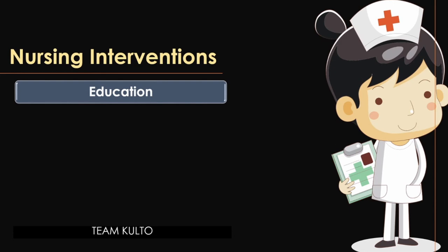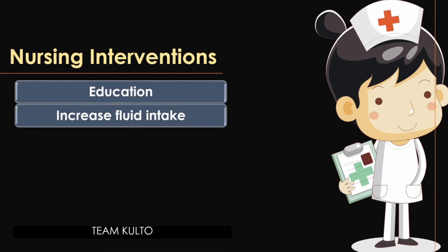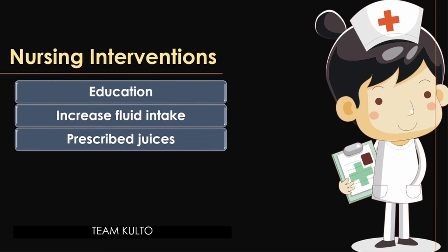Regarding increased fluid intake: urge the patient to drink plenty of water — at least eight glasses a day — and stress the need to maintain a consistent fluid intake of two liters per day. Prescribed fruit juices, especially cranberry juice, and oral doses of vitamin C may help acidify the urine and enhance the action of medication, because acidified urine helps kill bacteria. Also, watch out for GI disturbance from antimicrobial therapy, and administer nitrofurantoin with milk or a meal to prevent such distress.